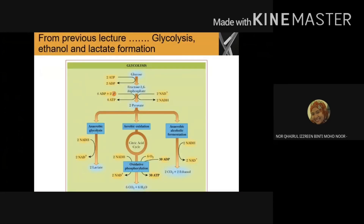From the previous lecture, we saw how glycolysis, ethanol, and lactate are formed. In glycolysis, we basically produce two ATP molecules, collecting only a small amount of the useful potential energy stored in the chemical bonds of glucose. To harvest the full remaining energy of glucose, we have to undergo aerobic cellular respiration, which only happens in the presence of oxygen. In glycolysis, we produce two ATP and NADH, but the remaining full potential of glucose is fully harvested in the next cycle, which is the TCA cycle.